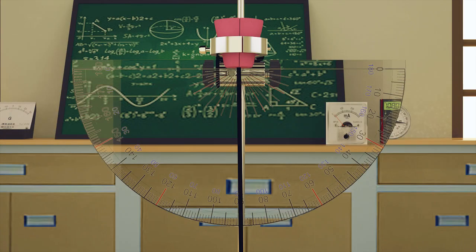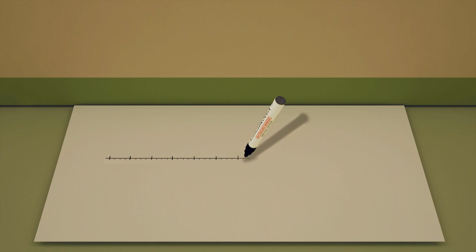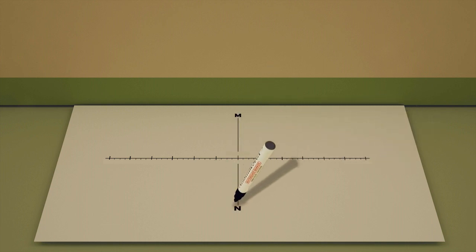Fix a large-size protractor just below the split cork. Ensure that the 0° to 180° line of the protractor is horizontal, and the pendulum hanging vertically in its rest position coincides with the 90° line of the protractor. Draw two perpendicular lines on a sheet of paper or the surface; mark them AB and MN.